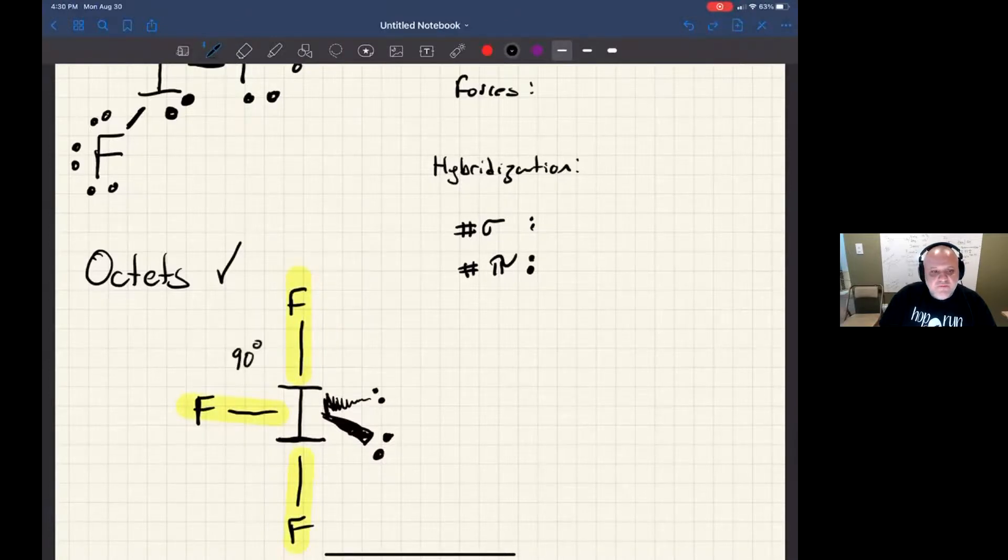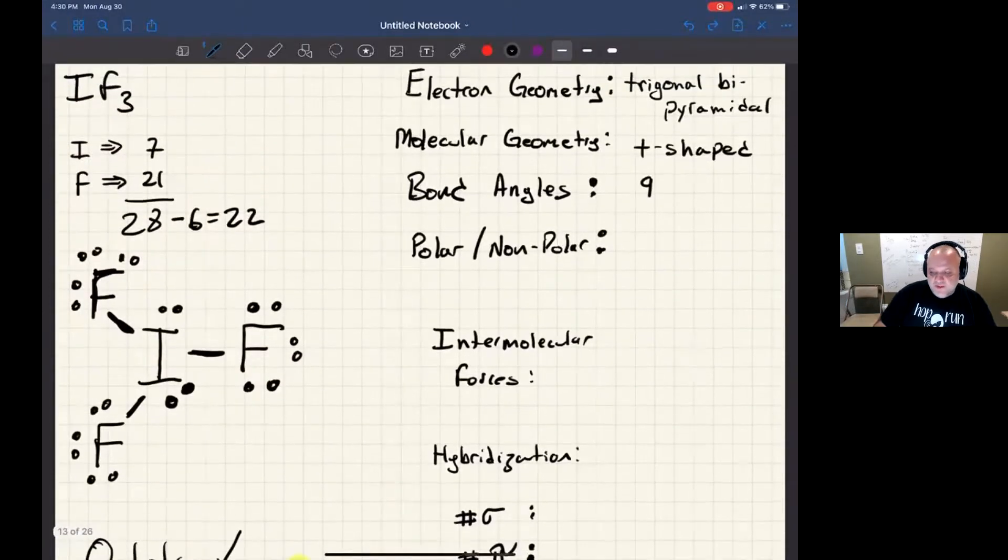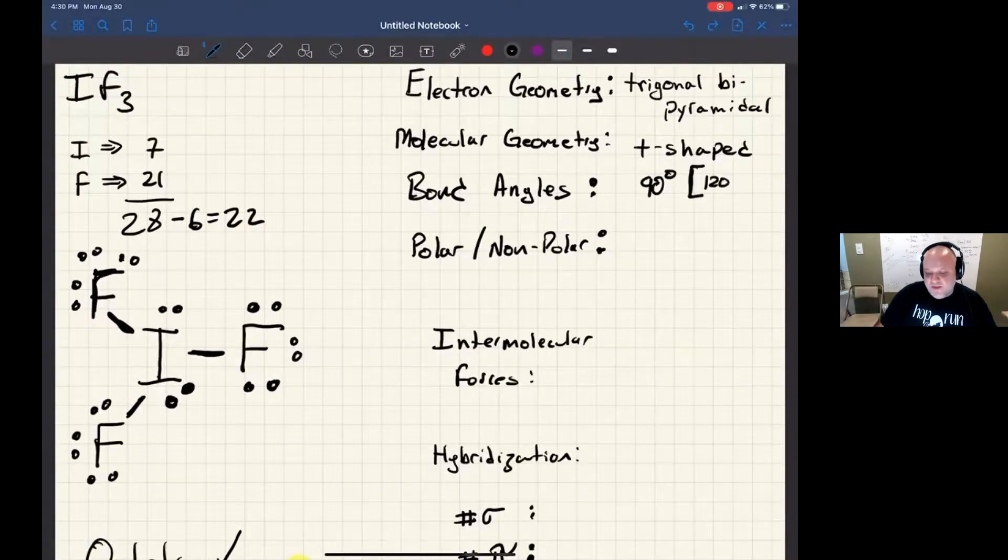Now for a trigonal bipyramidal geometry there could be two different bond angles—you could have both 90 degrees and 120. But if it's t-shaped, then the bond angles are only 90 degrees. Remember the bond angles do come from the electron geometry, and trigonal bipyramidal could have both 90 degree and 120 degree angles, but when it's t-shaped it turns out it's only just 90.